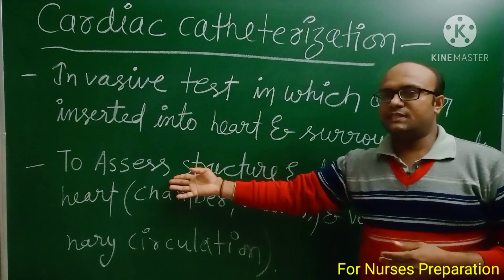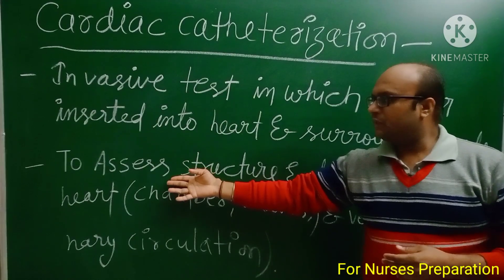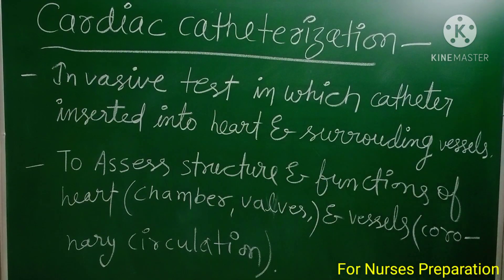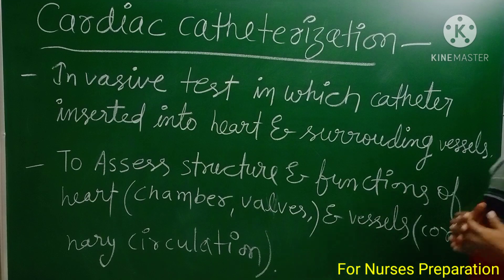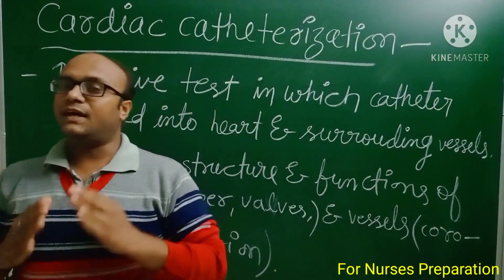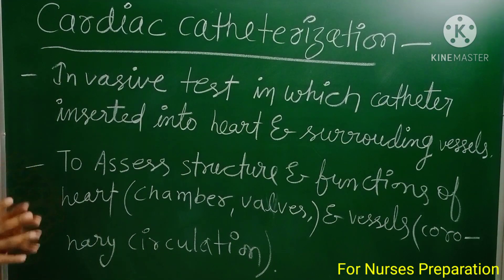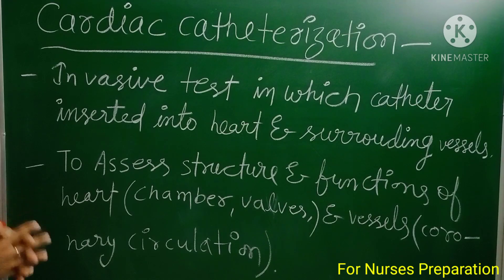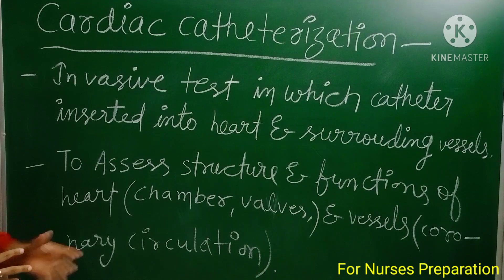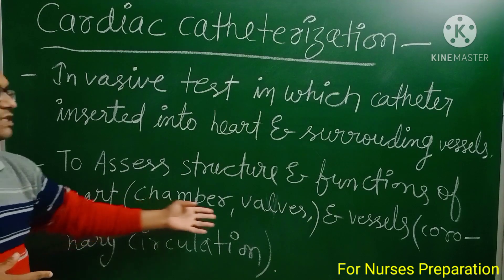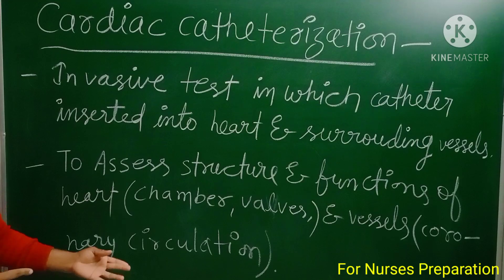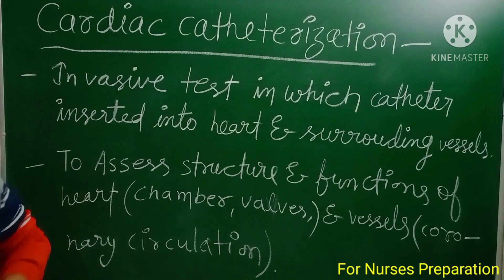Why are we performing cardiac catheterization? The purpose is to assess the structure and functions of the heart — its chambers, walls, and vessels like the coronary circulation. If a person is suffering with cardiac problems and we want to make a diagnosis, we can insert a cardiac catheter into the person's body to assess the anatomical structure of the heart, including chambers, walls, and coronary arteries that continuously supply blood to the heart.